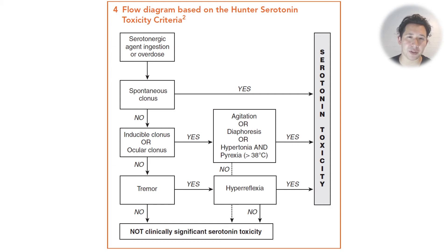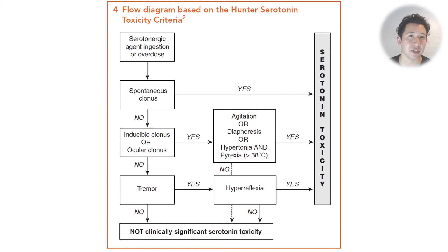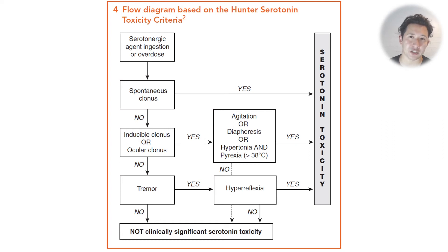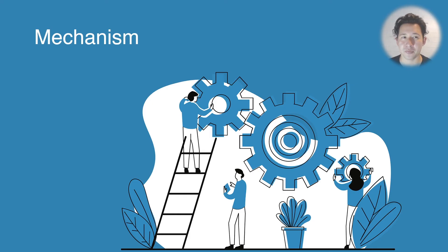It's worthwhile noting that serotonergic agent ingestion is really important. If you've had a dopamine antagonist or even an antipsychotic like olanzapine, which is a serotonin antagonist, then you're clearly not going to be diagnosed with serotonin syndrome based on these criteria, because it doesn't make sense based on the pharmacology.